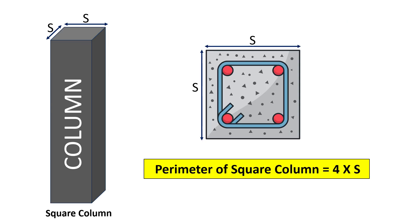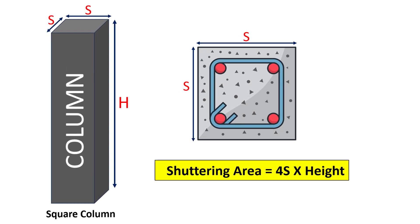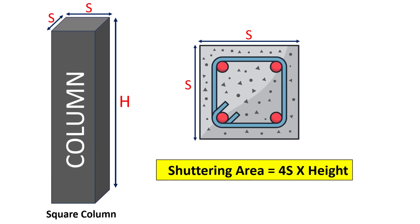For a square column, its perimeter is calculated by multiplying the number of sides by the length of each side. The formula to find the shuttering area of a square column is: shuttering area = 4s × height, where s is the side of the column.